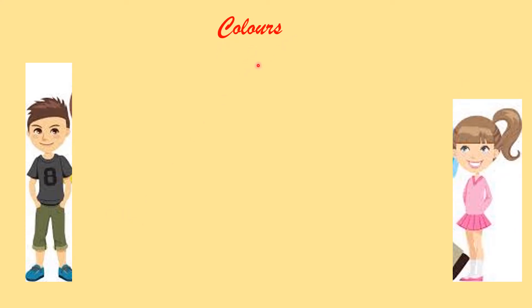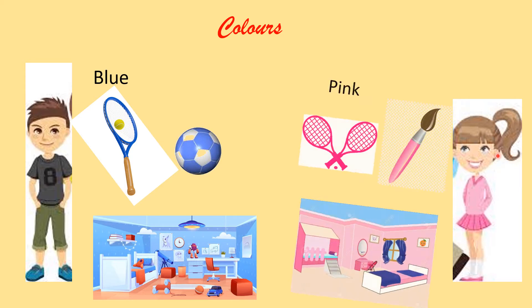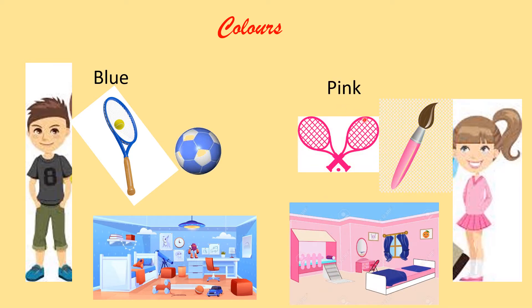Colors. Rohit likes the color blue. He has everything in blue. His football, his badminton racket, his room is also blue. While Riya likes the color pink. Her rackets are pink. Her paintbrush is pink. Her room is also pink. So they are different. He likes the color blue and she likes the color pink.